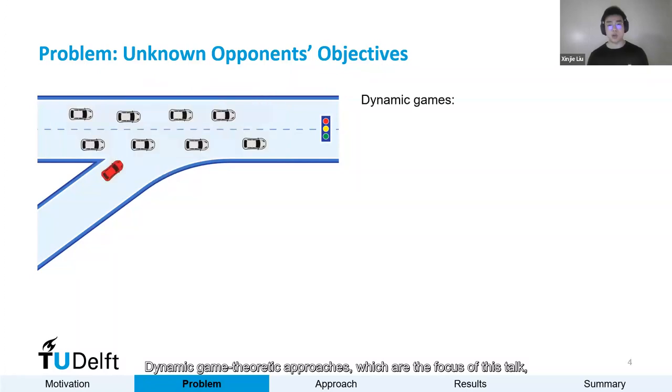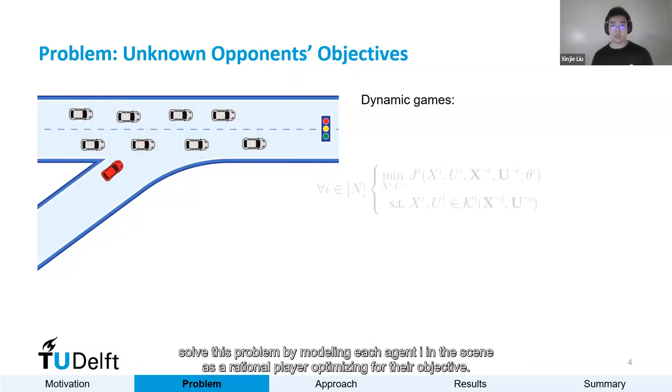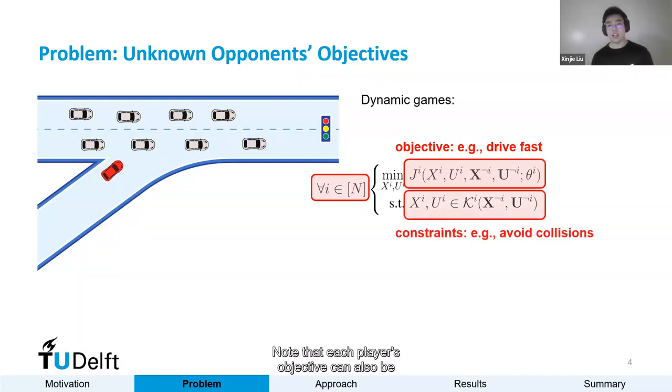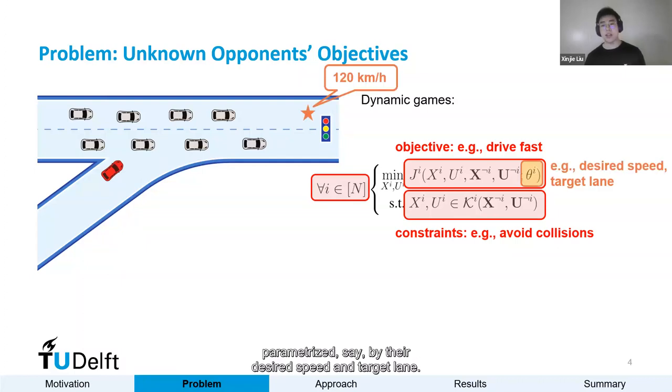Game theoretic approaches, which are the focus of this talk, solve this problem by modeling each agent in the scene as a rational player optimizing for their objective. Say they want to drive fast, in this case, and subject to constraints such as collision avoidance. And note that each player's objective can also be parametrized, say by their desired speed and target lane.